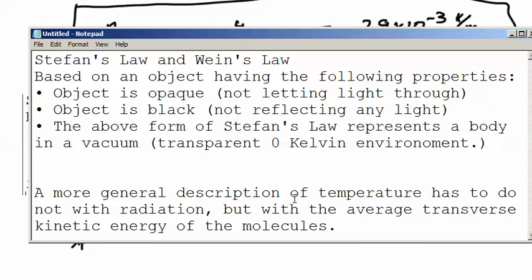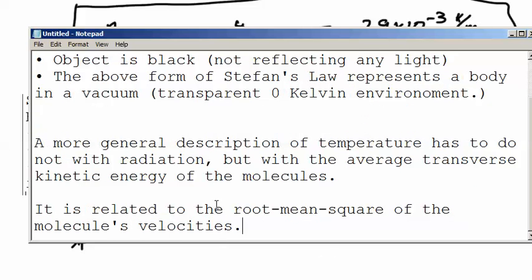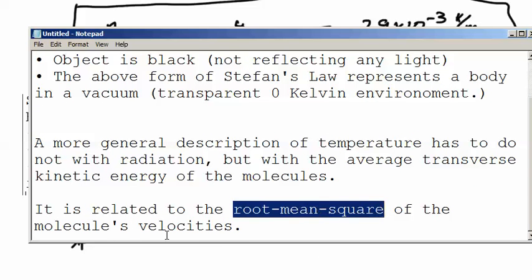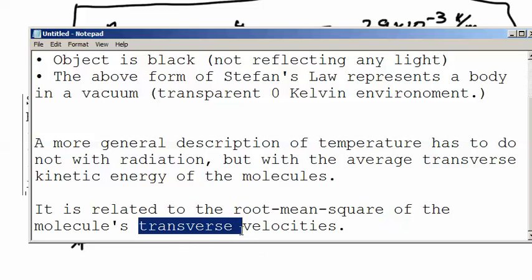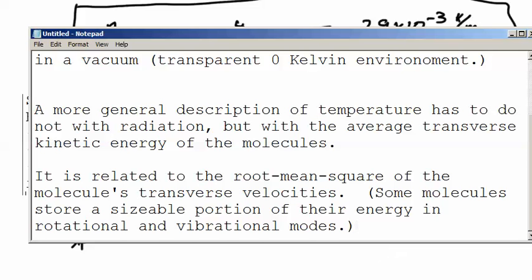Now a more general description of temperature has to do not with the radiation, but with the average transverse kinetic energy. It is related to the root mean square of the molecules' velocities, in particular the transverse velocities, which differs from the rotational velocities. Some molecules store a sizable portion of their energy in rotational and vibrational modes.